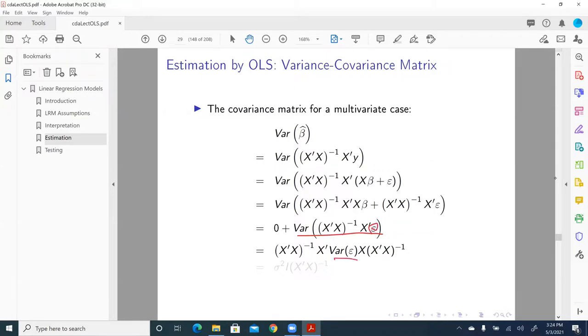So it becomes X prime X inverse X prime, multiplied by the variance of epsilon, multiplied by X, X prime, X inverse.